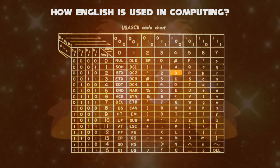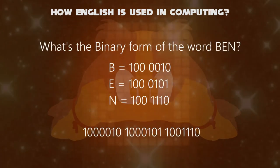B in the first place is 1000010. E in the second place is 1000101. And N in the third place is 1001110. Great guesswork. Thank you, you little guy.